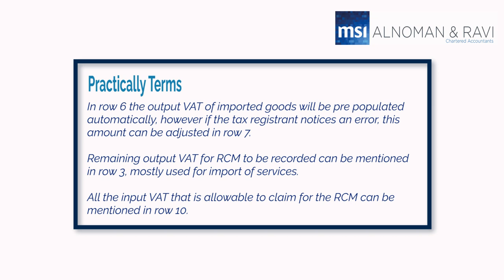All the input VAT that is allowable to claim for RCM can be mentioned in row 10. In summary, the output VAT for the RCM is to be mentioned in rows 3, 6, and 7. The amount to be claimed for RCM can be mentioned in row 10, which is normally the total of the amounts mentioned in rows 3, 6, and 7. So in most cases while filing for RCM, the net impact is nil and therefore there is no change in the tax payable.